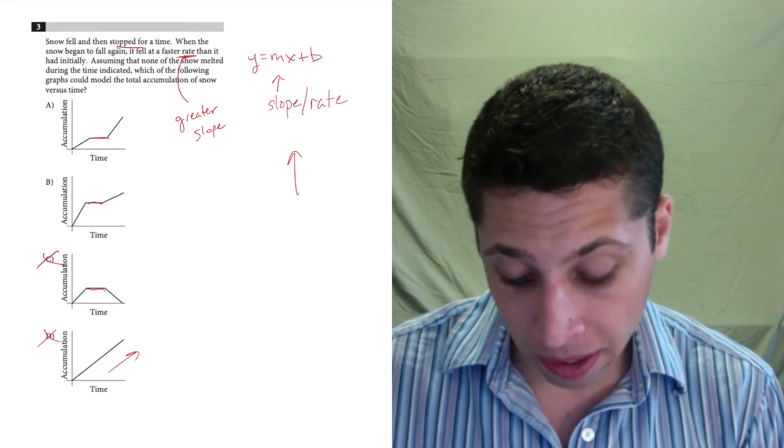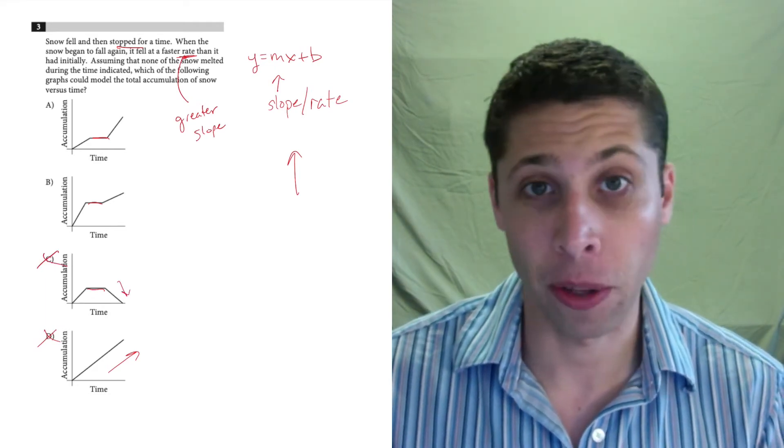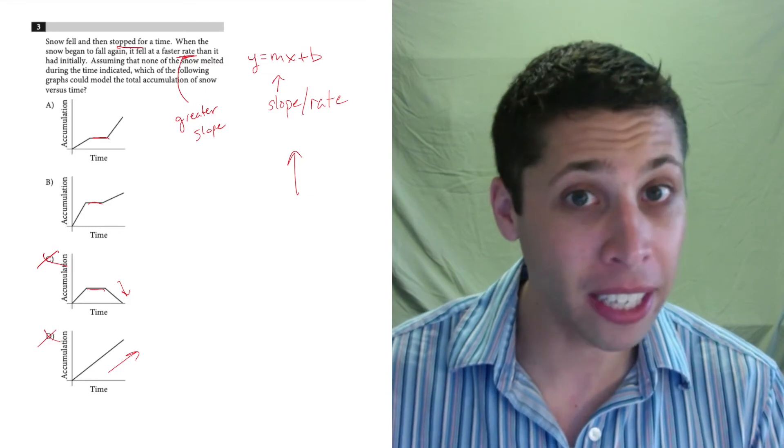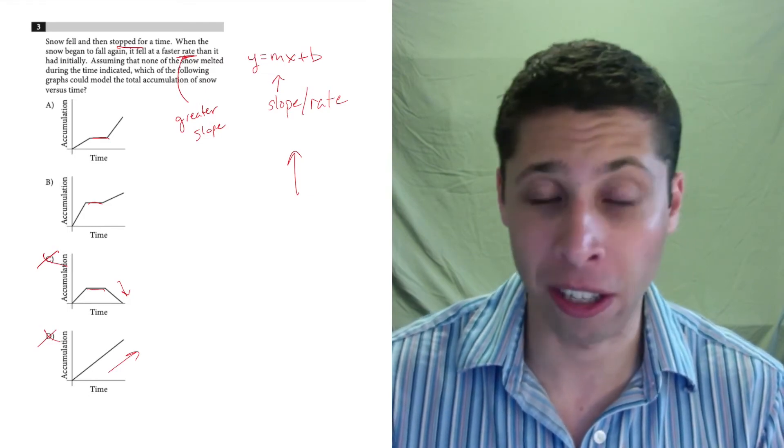So we're looking now to compare the first increase to the second increase. C is wrong because this isn't an increase, this is a decrease at the end. So that doesn't make any sense. The snow is not melting. It says that specifically in the question. It's only increasing.